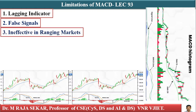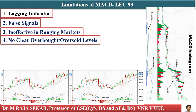Third, MACD is ineffective in ranging markets — it works better in trending markets, and in sideways markets the indicator may oscillate around the zero line, leading to misleading signals. Fourth, there are no clear overbought or oversold levels. Unlike RSI, MACD does not have a fixed range, so traders rely on historical levels to determine overbought and oversold conditions, making it more subjective.